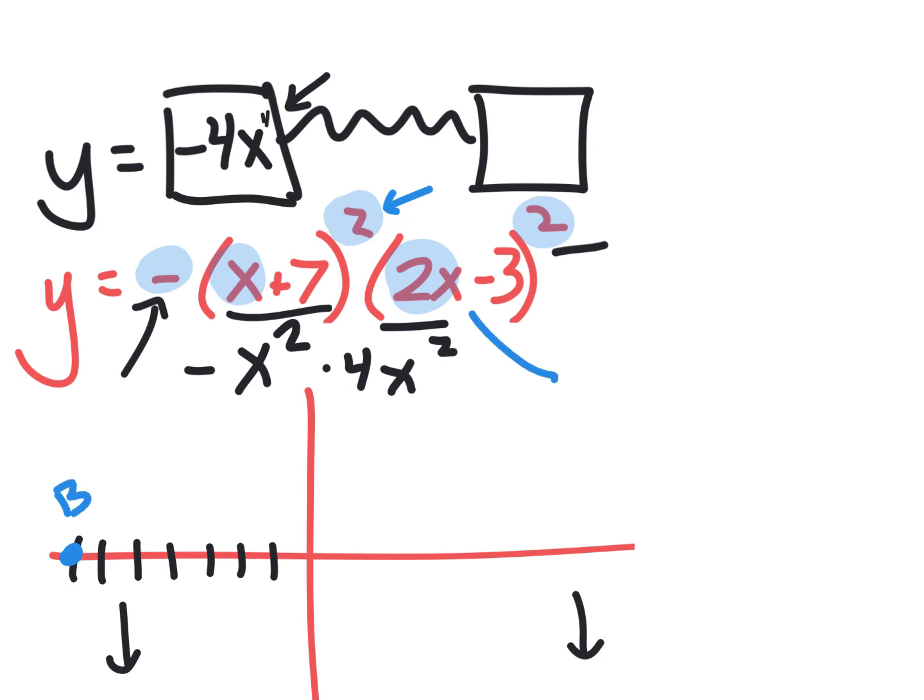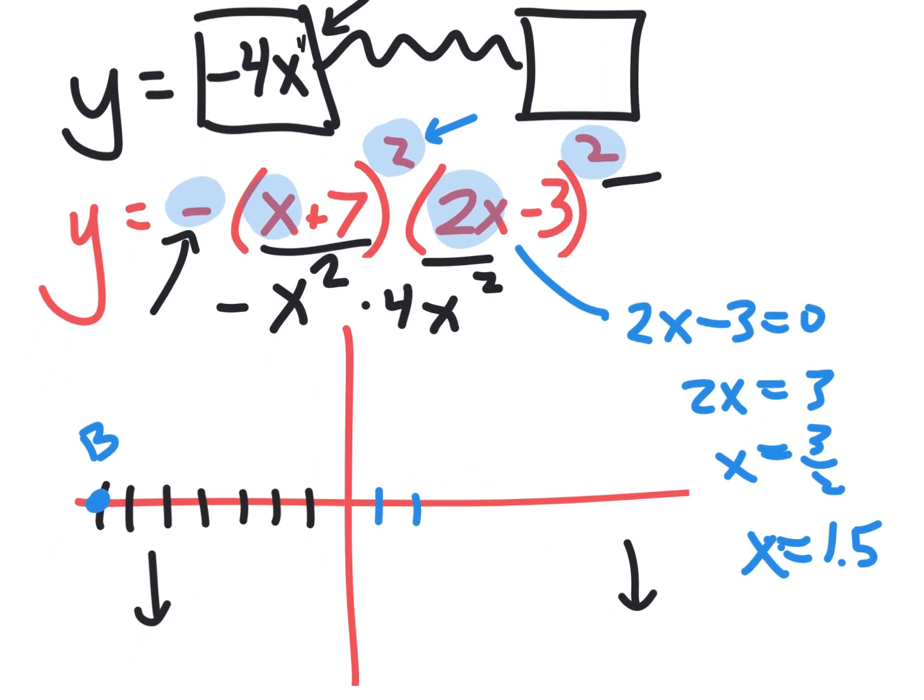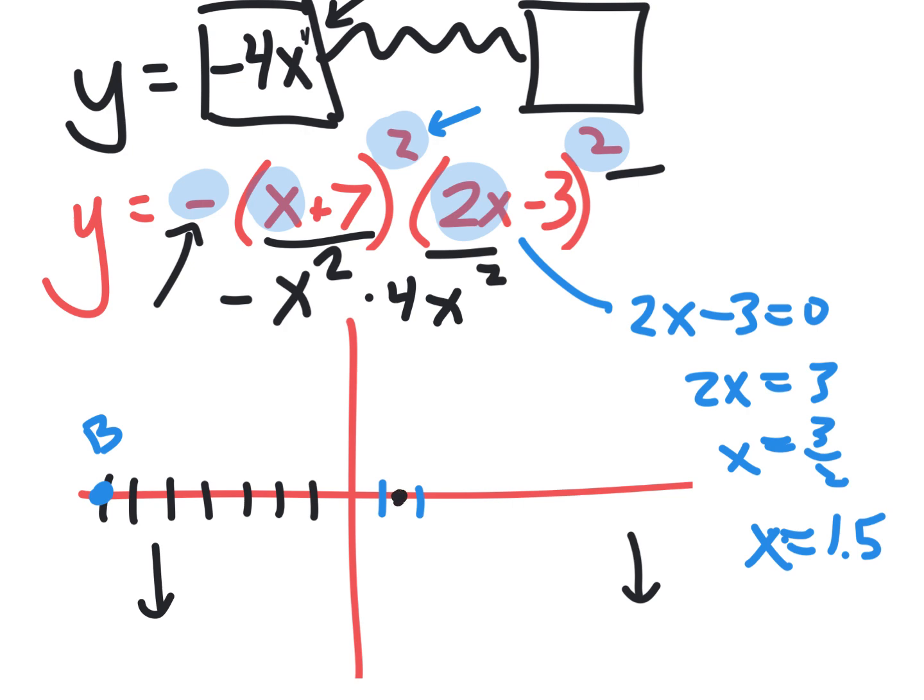Then here, what x-intercept is that? 2x minus 3 equals 0, so 2x equals 3, so x equals 3 over 2. That's the same as x equals 1.5. So I'm going to put a couple of marks here, and then 1.5 would be right there. And that one is also a bounce, putting a B there.